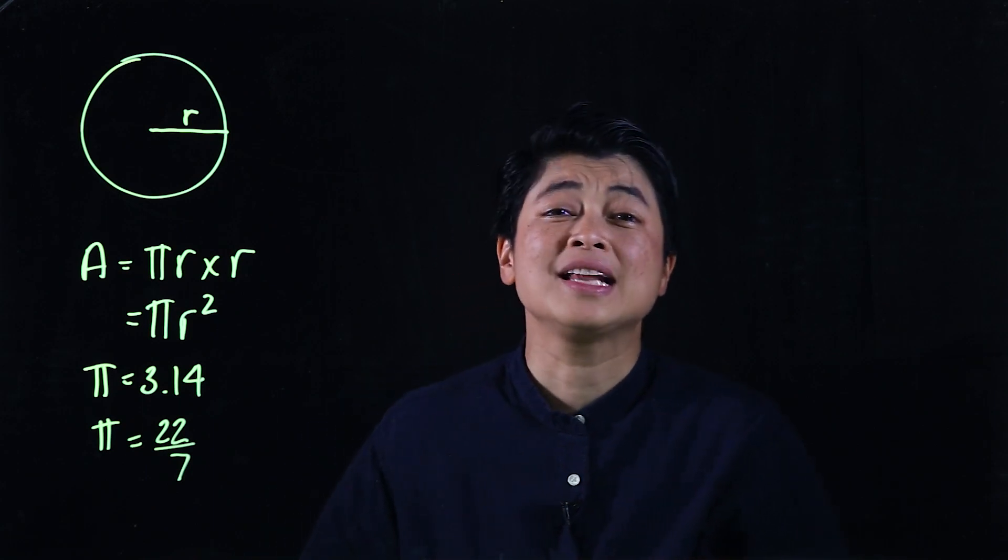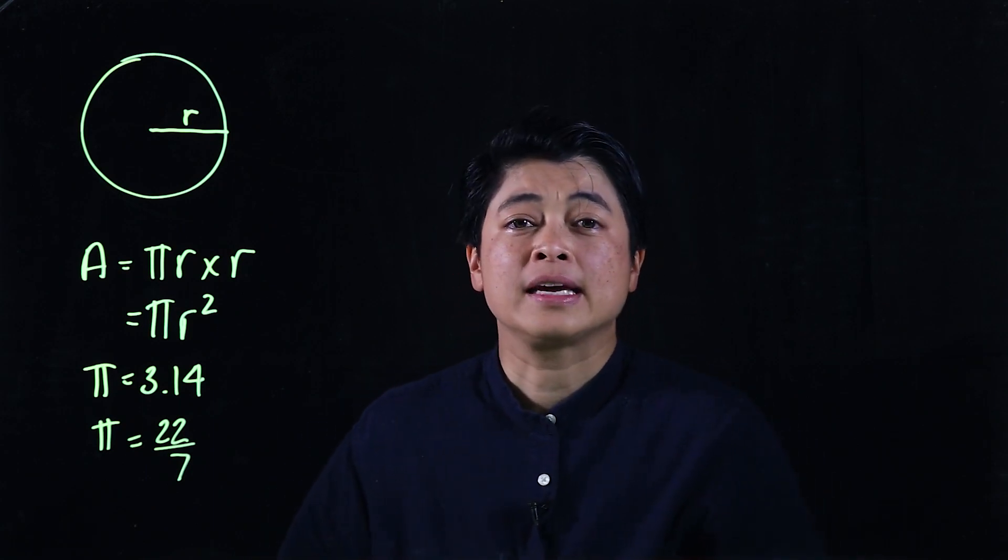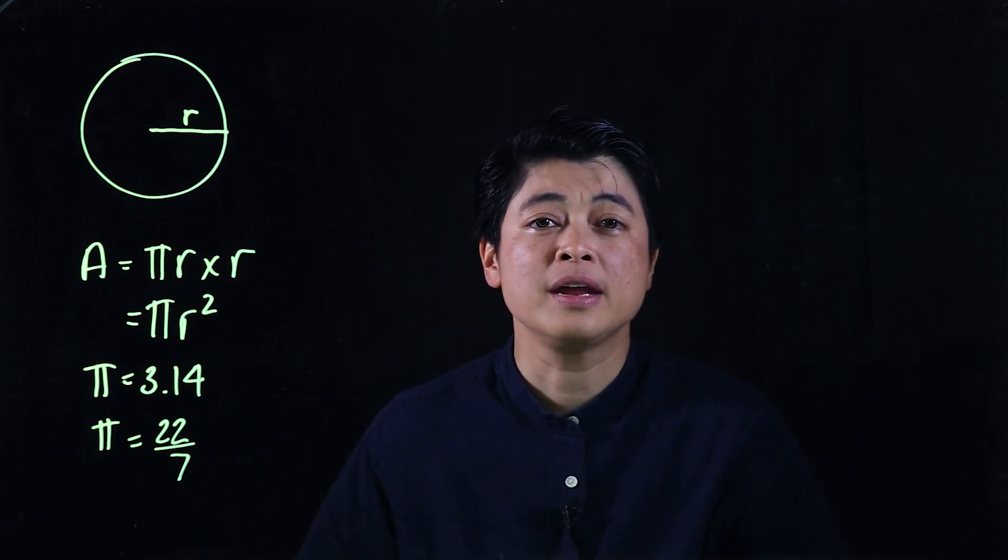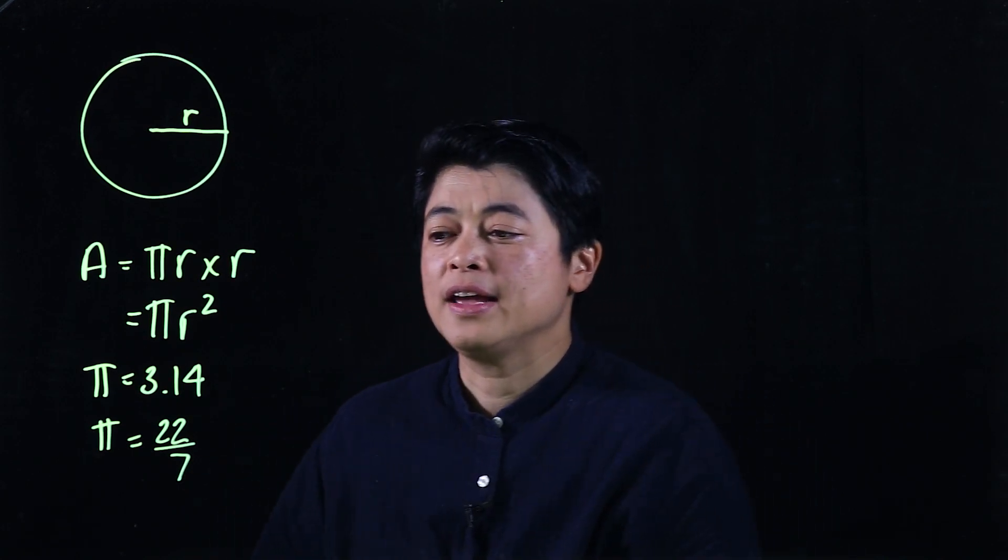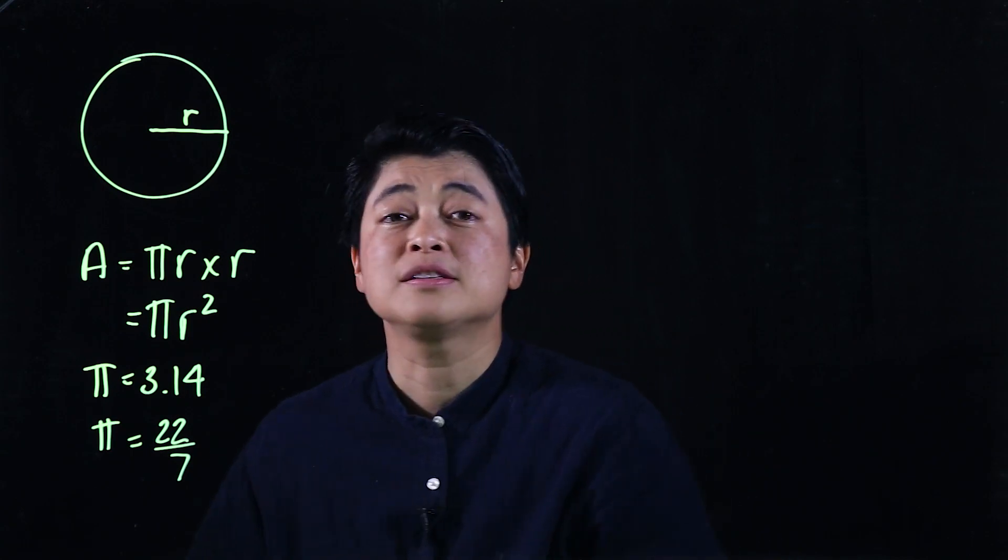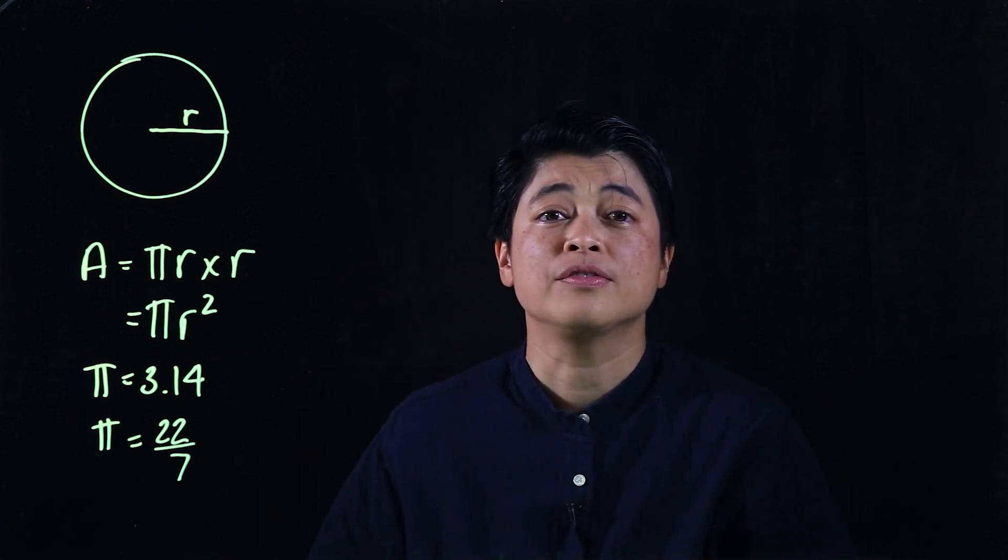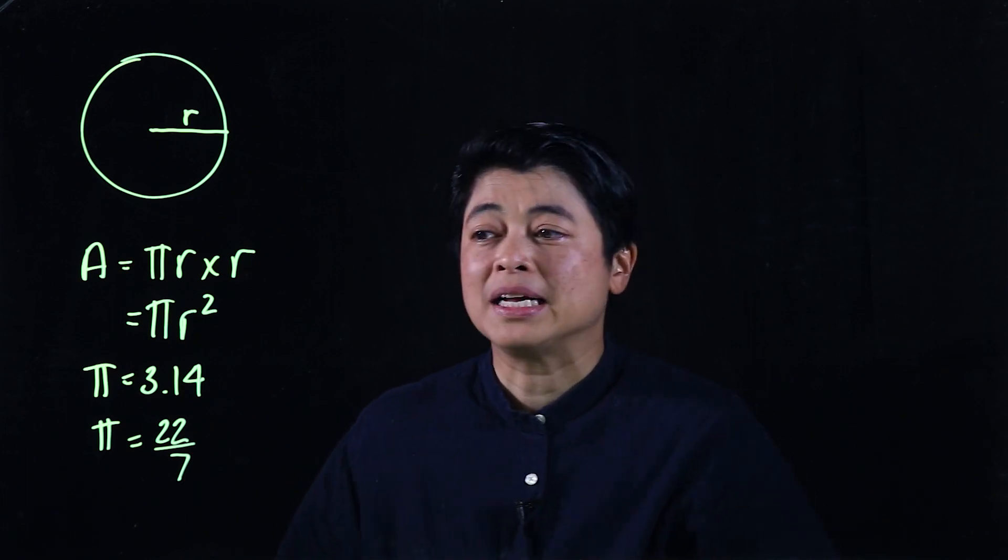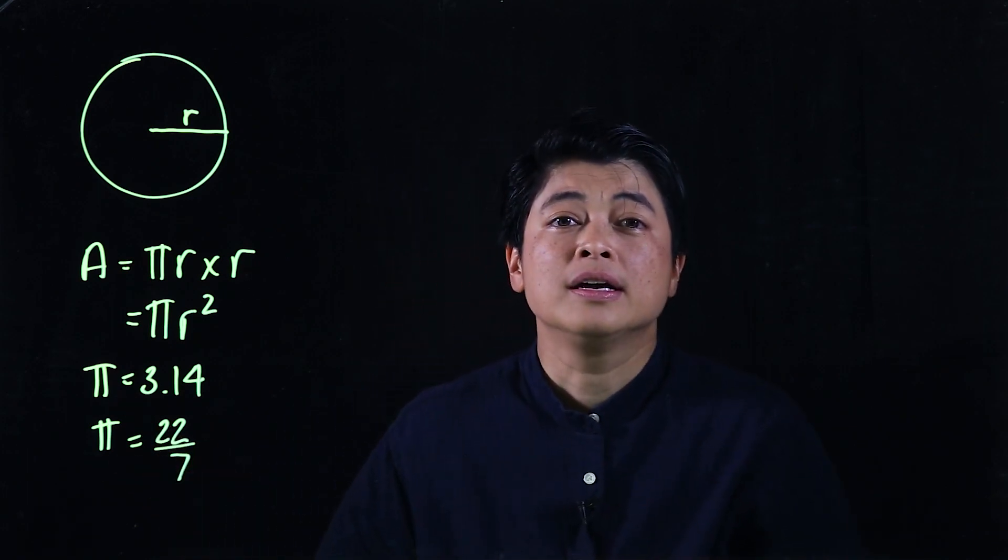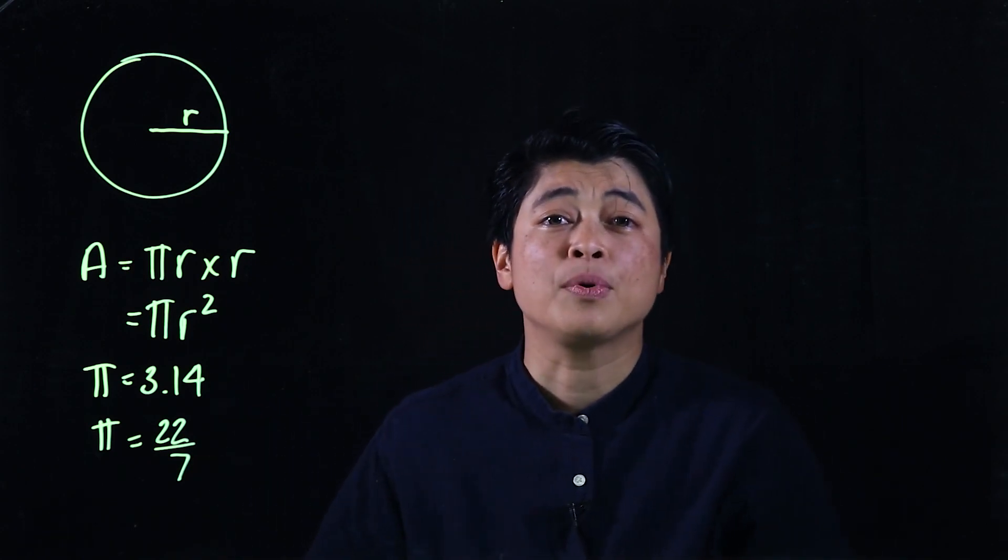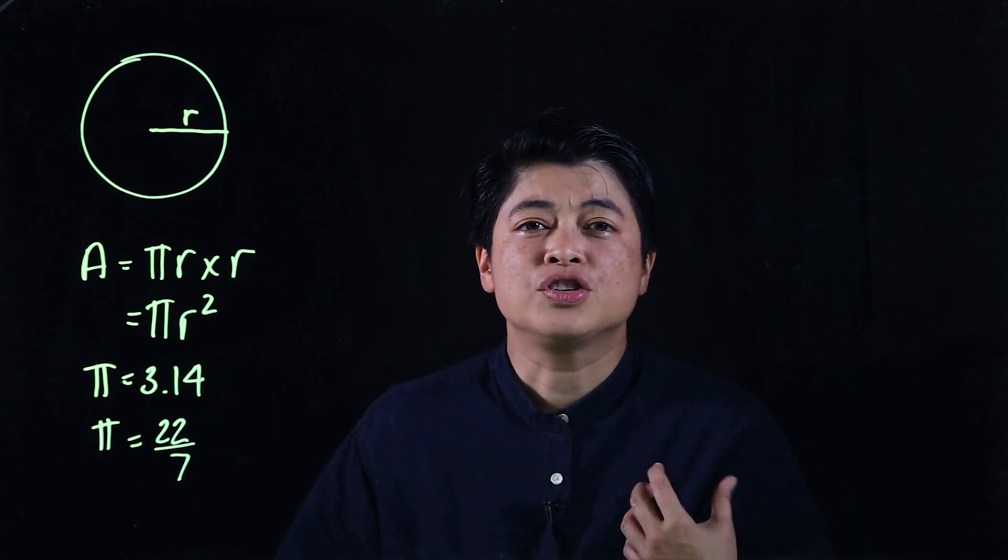So again, most likely if the kids are allowed to use a calculator it'll say use 3.14. If it says to compute manually then that means most likely they'll say 22 over 7. Now there is a pi button in the calculator but I would refrain from using it if they tell you to use 3.14.